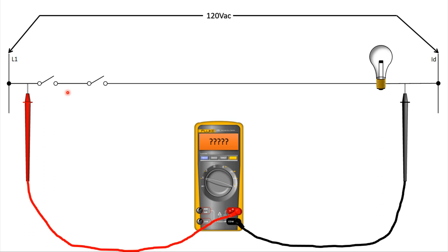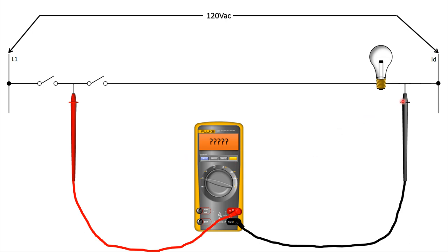Let's open both switches. My red lead is in direct contact with line one and my black lead is at identified, so I'm reading source voltage again. Now the trickier one: the black lead is still at identified, but if we look at where the red lead is, it's connected to a portion of the circuit that's floating in the middle — there is no potential here. It's like holding one lead to identified and waving the other in the air — you're not going to read any voltage, and that's exactly what we see on the meter.